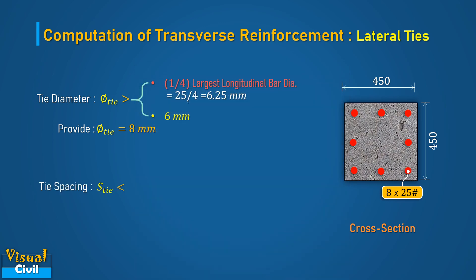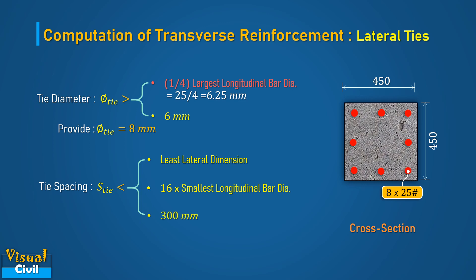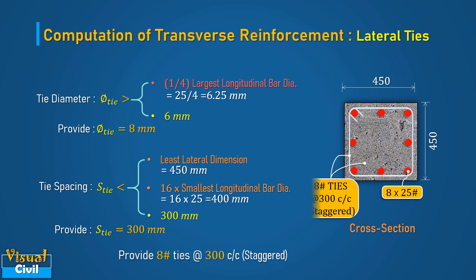second, 16 times the smallest diameter of the longitudinal bar; and third, 300 mm. Here, the least lateral dimension is 450 mm, and 16 times the smallest diameter of the longitudinal bar is 400 mm. Hence, provide the spacing of the ties equal to the least of all three values, that is 300 mm. Therefore, provide 8 mm diameter ties at 300 mm center to center.